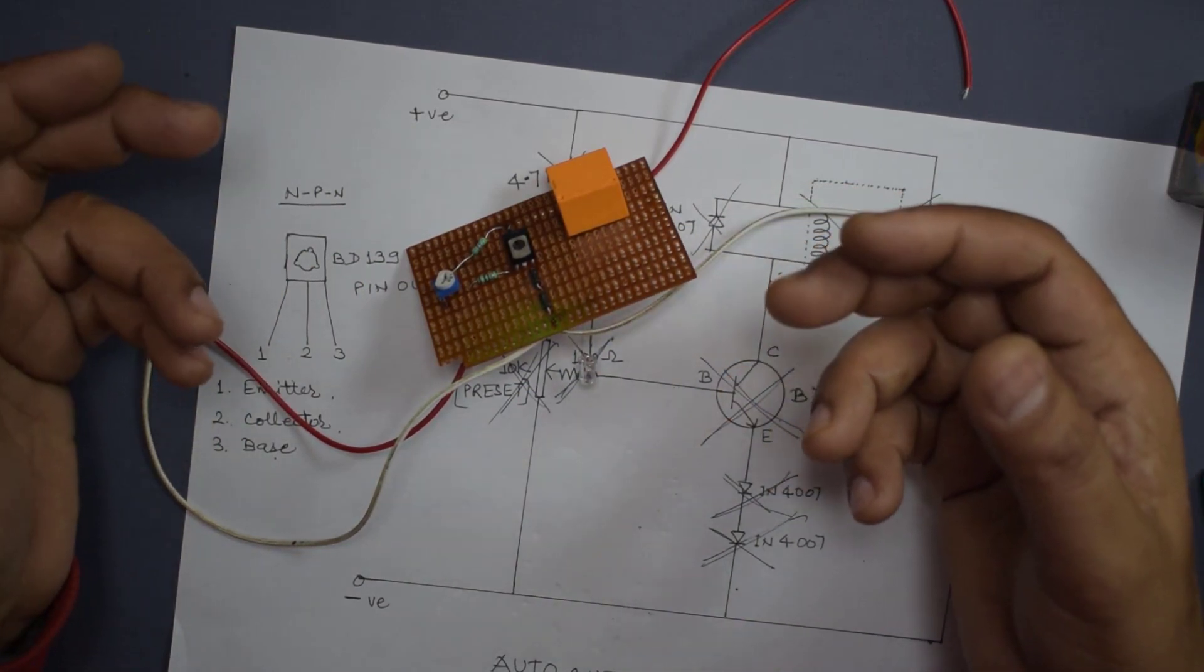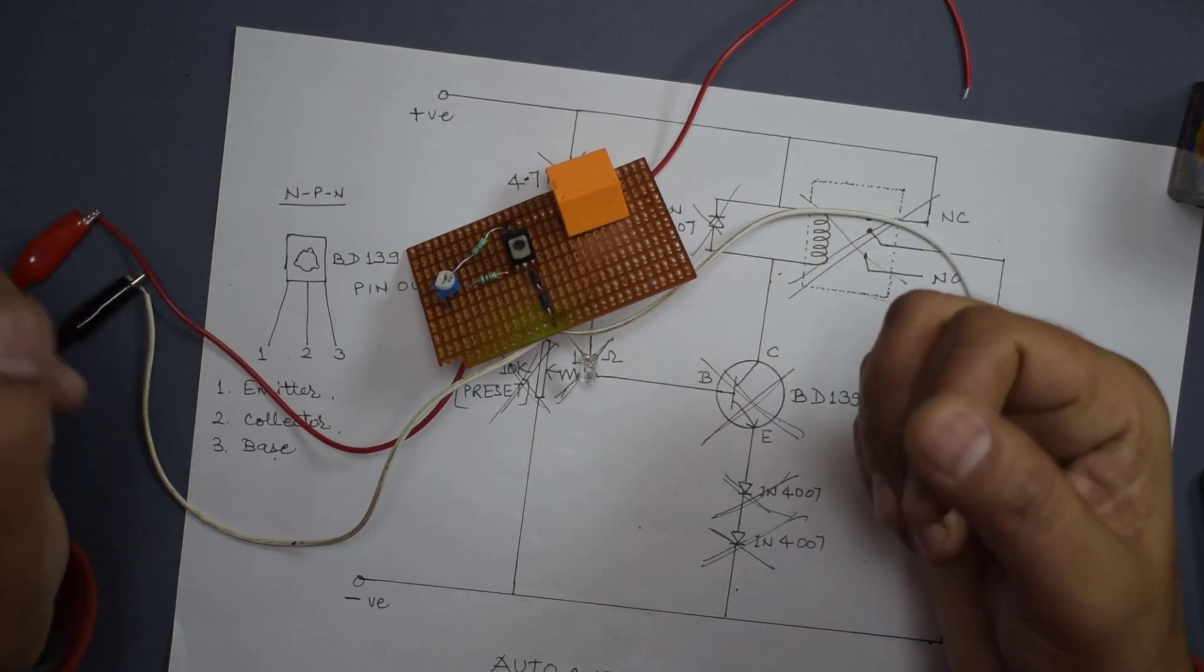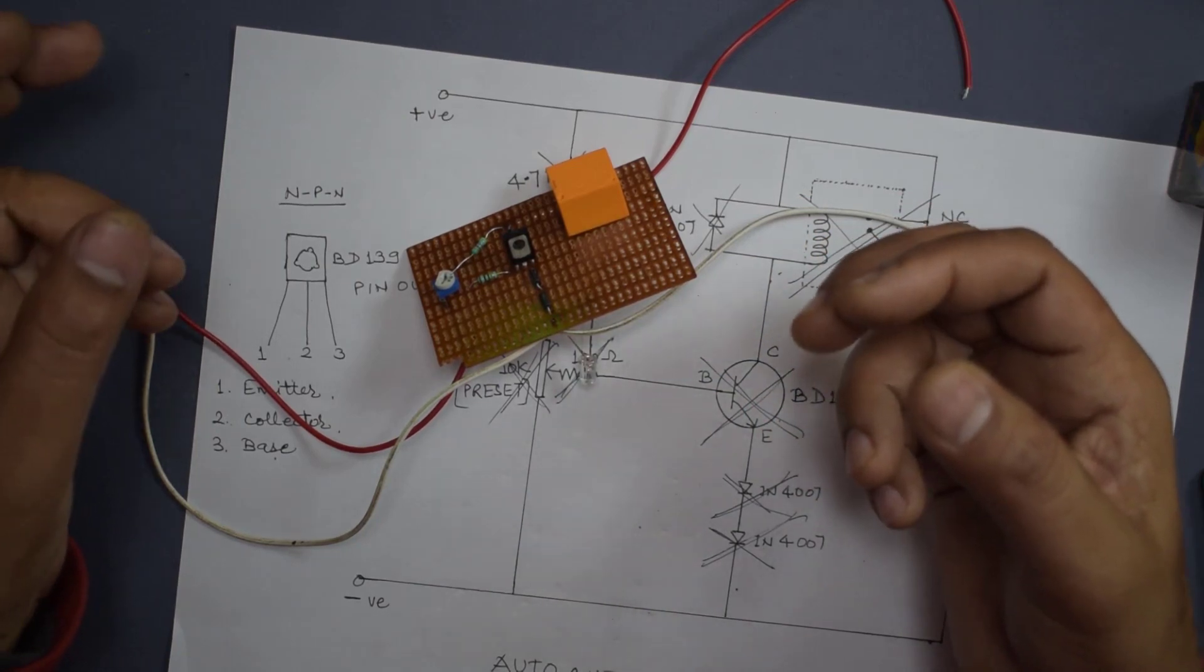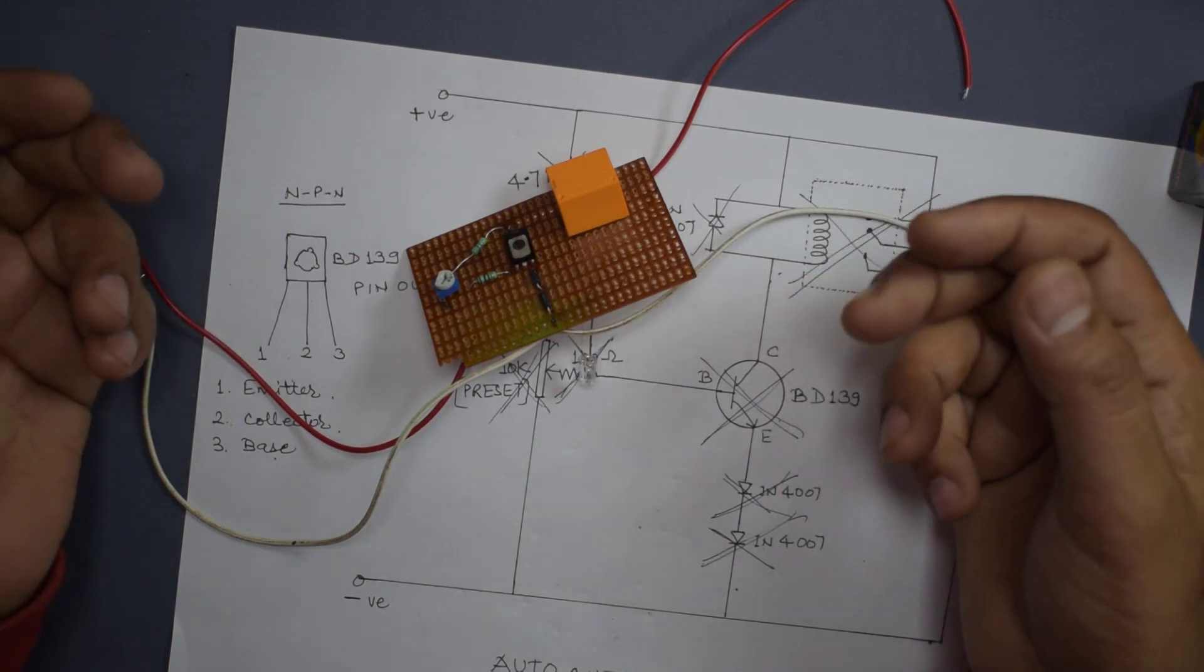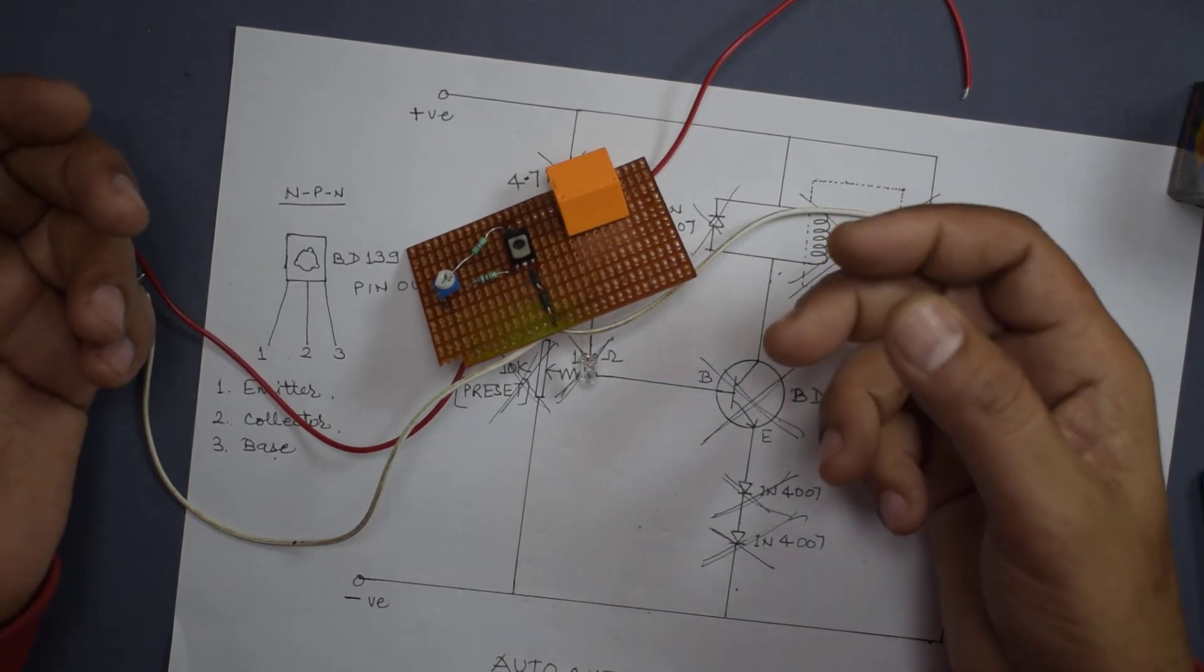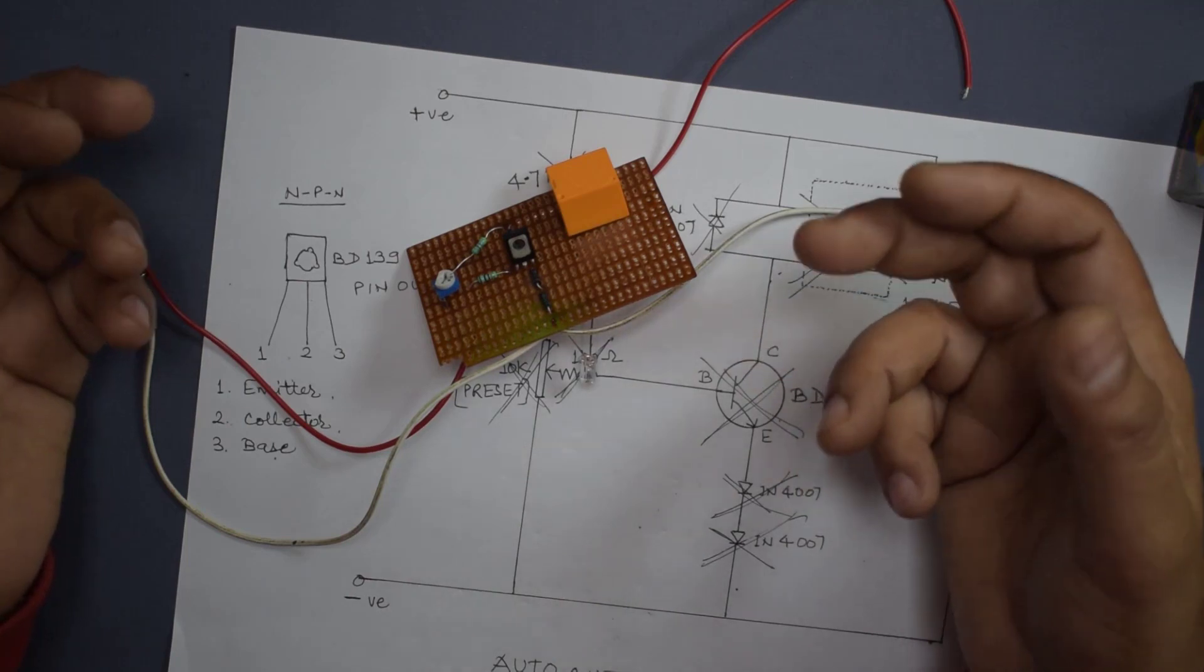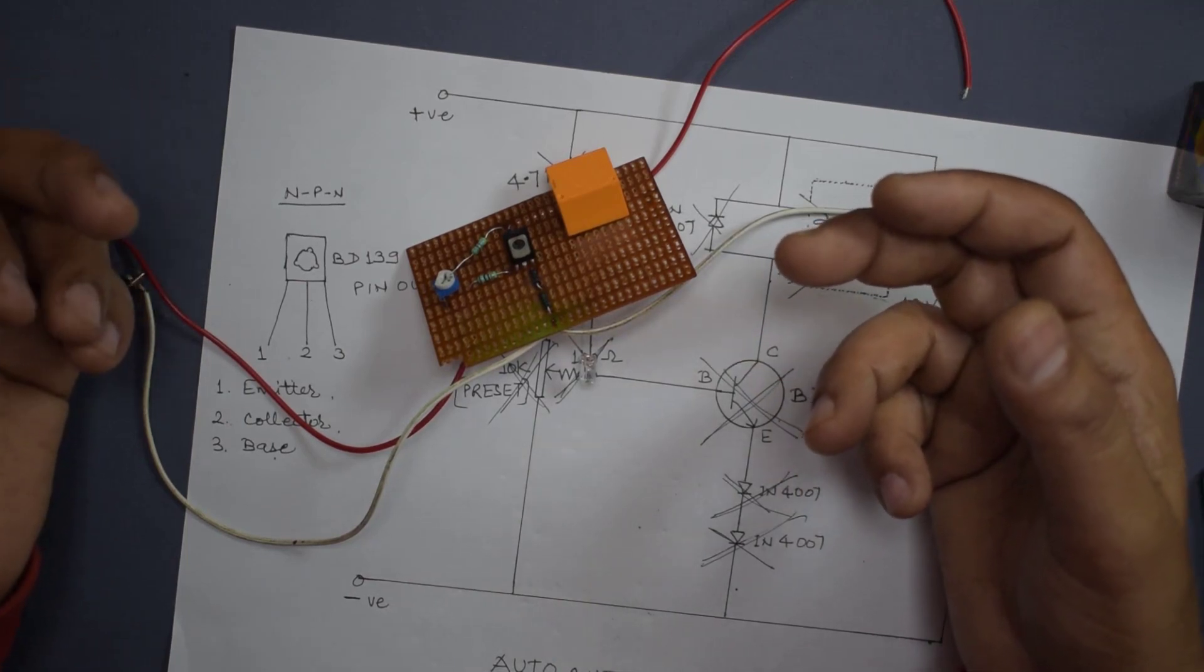For example, if you are using lithium-ion batteries that is of 3.7 volt each, if you are connecting three batteries, it needs approximately 11.2 volts to charge or 11.5 volts. So you can set the threshold value.